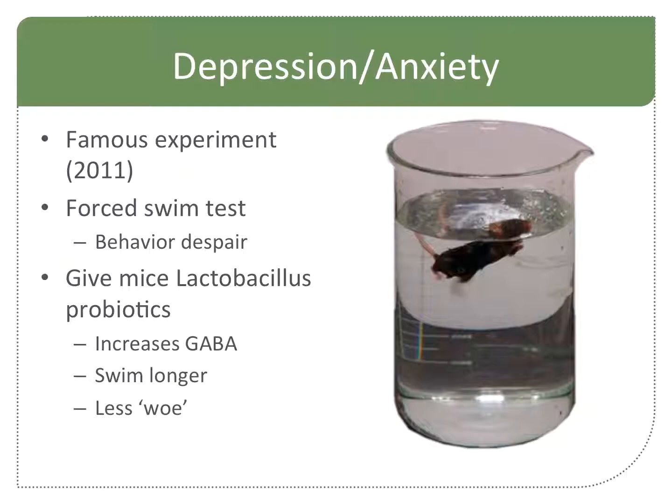In a mouse, when they start getting distressed in the water, their mouth starts opening — that's what behavioral despair looks like. But if you give them lactobacillus, they just keep swimming and go way longer. A probiotic actually changes how a mouse behaves in a swim test — it's super repeatable. And we've determined the mechanism: it's GABA. The lactobacillus is actually increasing GABA in the mouse, and the mouse experiences less distress.